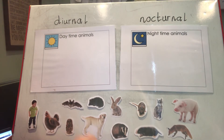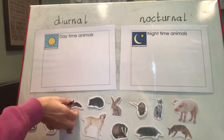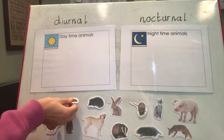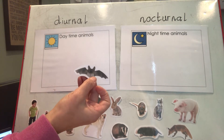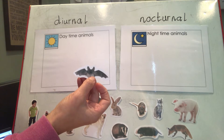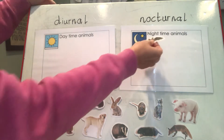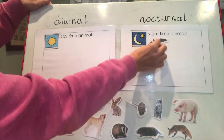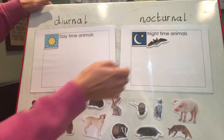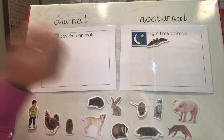We'll take them one by one and I'll leave a little pause so you can decide with your grown-up whether it's nocturnal or diurnal. Let's start with a bat — do you see bats in the day or do they come out at night? Well done if you said nocturnal — they are a nighttime animal.